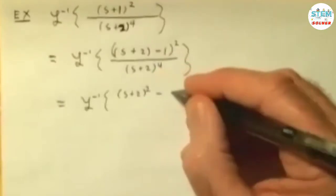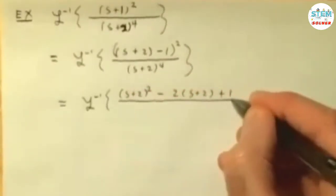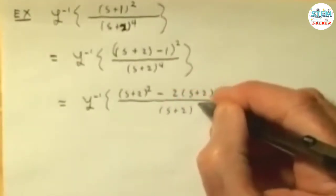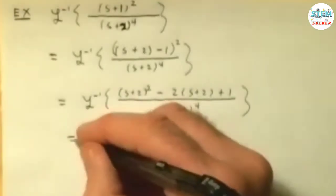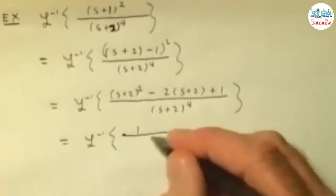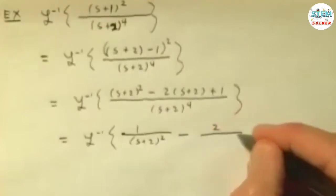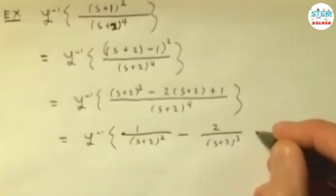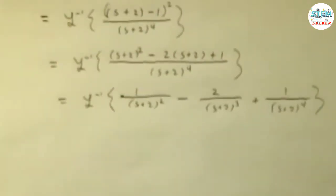You'd have s plus 2 squared minus 2(s plus 1) plus 1 over s plus 2 to the 4th. You can probably see where I'm heading with this now. This allows me to break it up into three very simple fractions. You'd have 1 over s plus 2 squared minus 2 over s plus 2 cubed plus 1 over s plus 2 to the 4th.